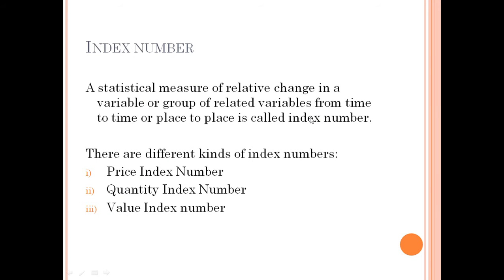What is index number? A statistical measure of relative change in a variable or group of related variables from time to time or place to place is called index number. So index number is a statistical measure that measures the changes in some quantities — in one variable or a group of variables from time to time and from place to place.